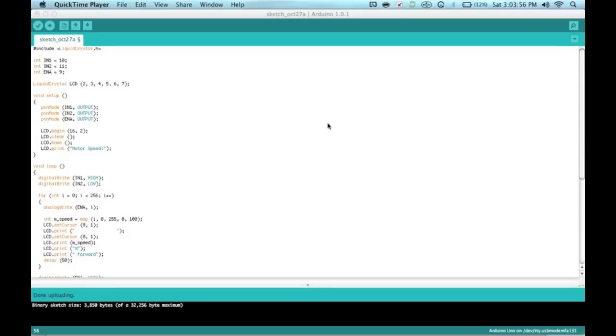Here's the code I've written for the motor driver. At the top, I've included the LCD library, because we want to add that functionality to our project. Here we've defined the pins. In the setup, made them all output and started the LCD and printed a little message at the top.